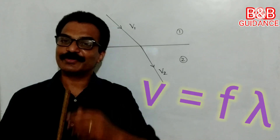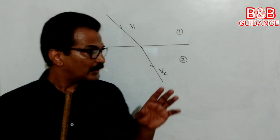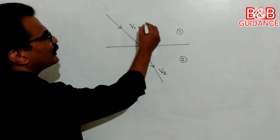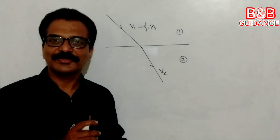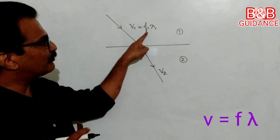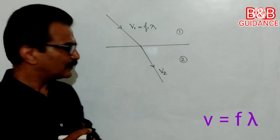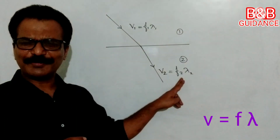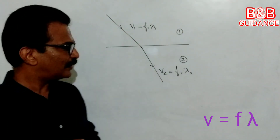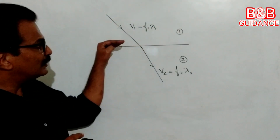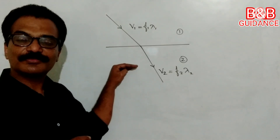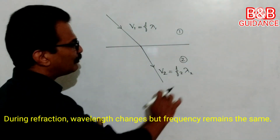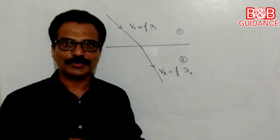Do you remember that famous wave equation? V is equal to F lambda. You can write this in terms of frequency and wavelength: V1 = F1·λ1 for the first medium. When light travels from one medium to another, speed changes and wavelength changes, but frequency remains the same. So we can use the same F for both media.